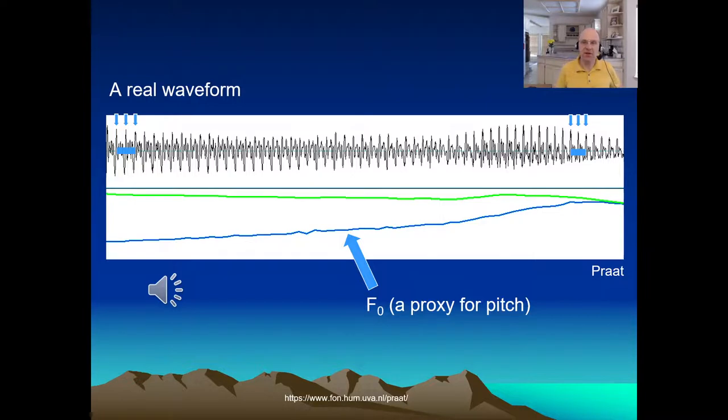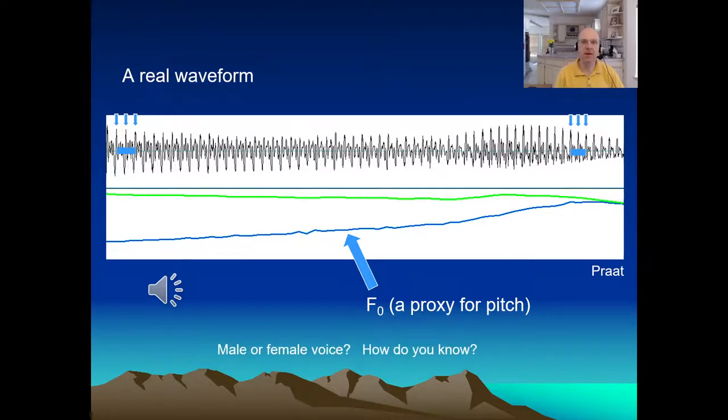F0 is a proxy for pitch for reasons we'll discuss. But first, a little digression. Do you hear this as a male voice or a female voice? Well, yeah. It is female, although it could also be a male child. It's not an adult male. And we know because the pitch is kind of high. The vocal folds are vibrating quickly. These particular vocal folds happen to be vibrating quickly because they're kind of short. And that's because they're in a kind of smallish larynx, which belongs to my daughter.